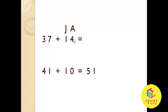In the same way, let's have another example. What is 37 plus 14? So 4 is to add: 37 plus 4 is equal to 41, and then jump on 10: 41 plus 10 is equal to 51. So the answer is 51.